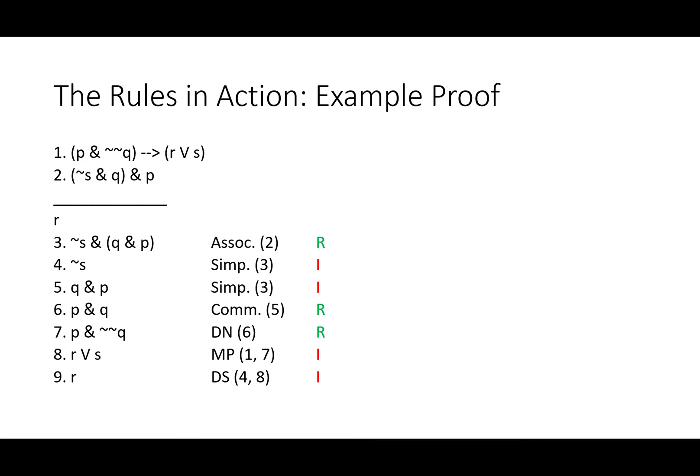And now we can use disjunctive syllogism to get R. We were not able to do this previously. Now that we have not S and we have R or S all on its own, we can get R. Disjunctive syllogism functions like scribbling out the disjunctive sign and the S. Not S is the case, so S is not the case, so we must be stuck with R. And sure enough, we are.